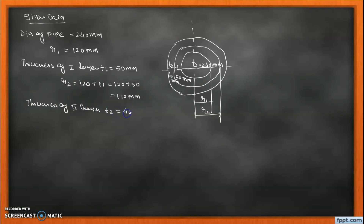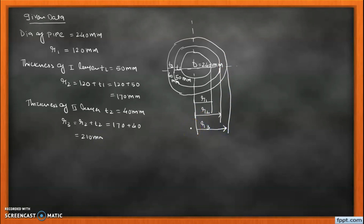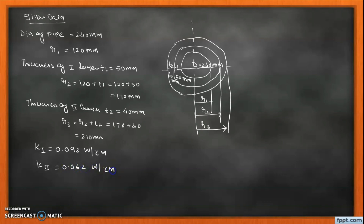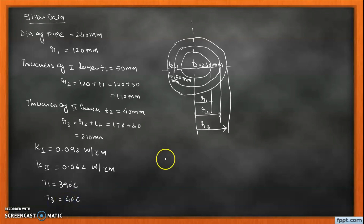The thickness of the second layer t2 is 40 millimeters, so r3 = r2 + t2 = 170 + 40 = 210 millimeters. The thermal conductivity of layer one, k1, is 0.092 W/m·°C, and k2 is 0.062 W/m·°C. The inner surface temperature T1 is 390°C and the outer surface temperature T3 is 40°C. The interface temperature is denoted T2.